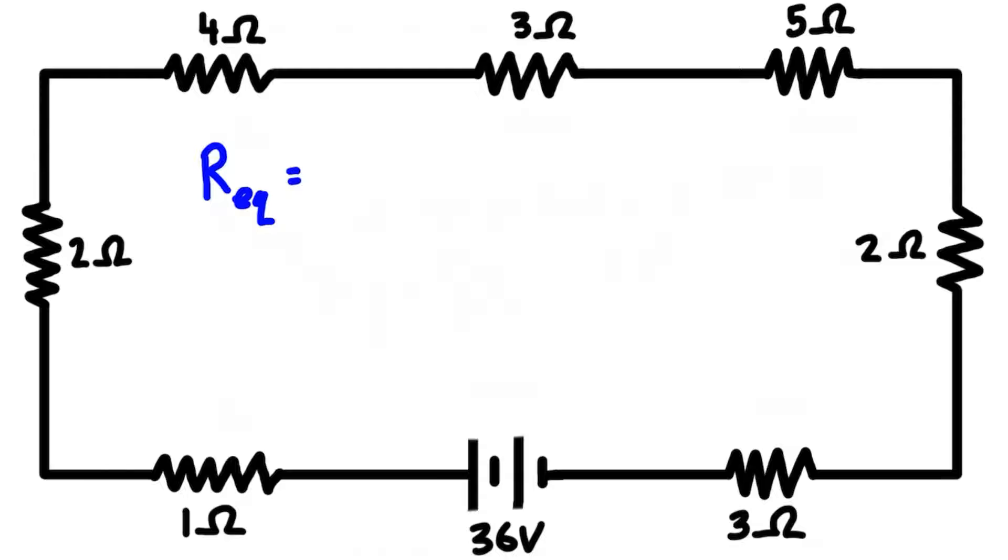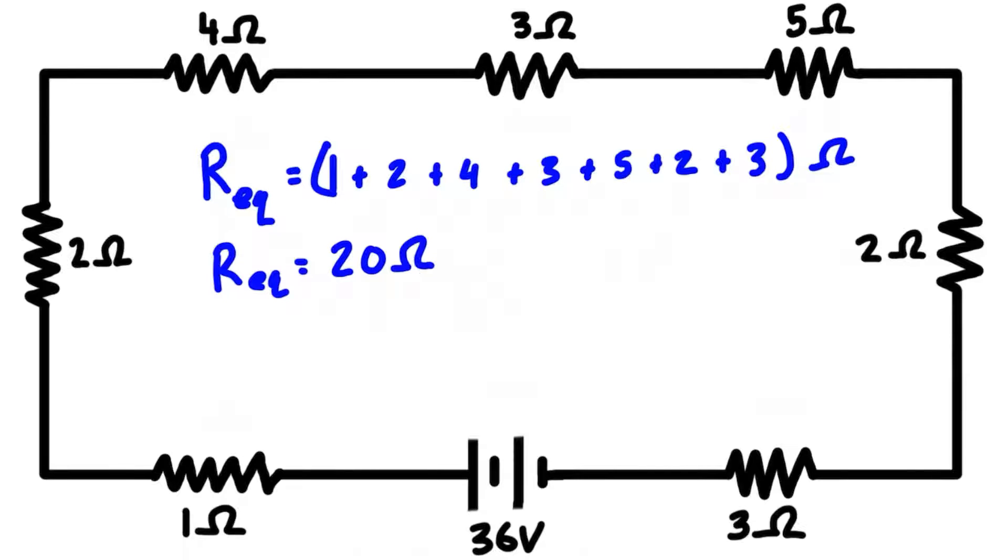The equivalent resistance is just going to be equal to—we can just pick a place to start, let's start here and go around the circle—so we just have 1 ohm plus 2 plus 4 plus 3 plus 5 plus 2 plus 3. That's all in units of ohms.